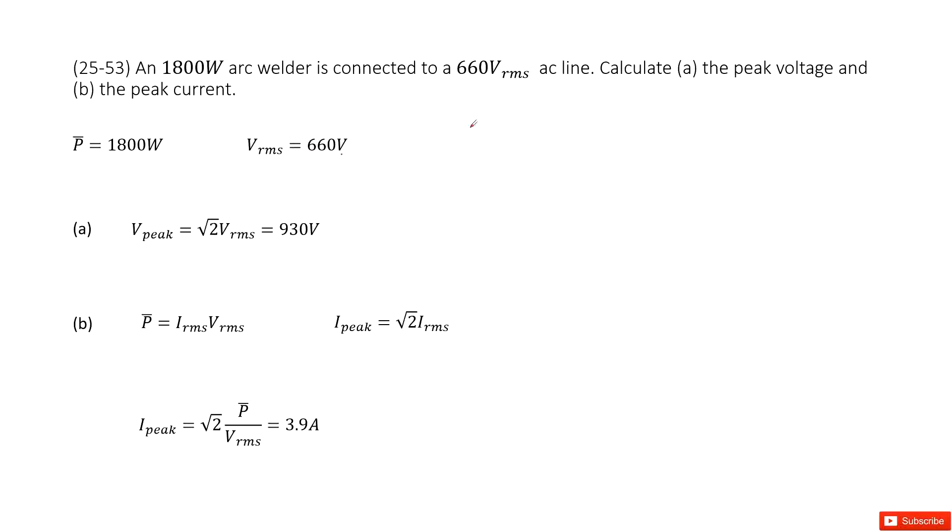Now you need to find the first one, the peak voltage. That is very easy by definition. The peak voltage is a constant, square root of 2 times V RMS. Input the quantity for V RMS, you get the answer there.